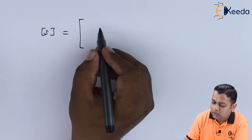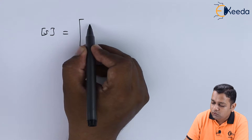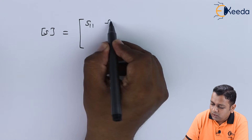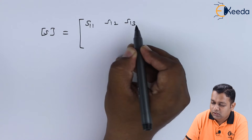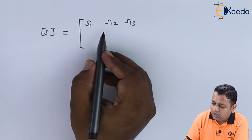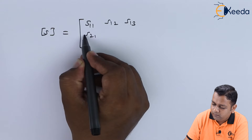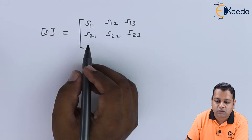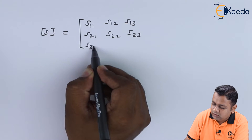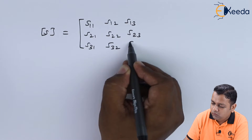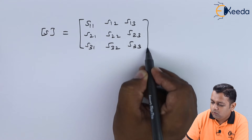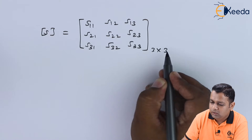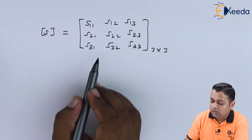Let us represent the unknown values of the scattering matrix: s11, s12, s13 for the first row; s21, s22, s23 for the second row; and s31, s32, s33 for the third row. This is the 3×3 matrix whose elements we need to determine.